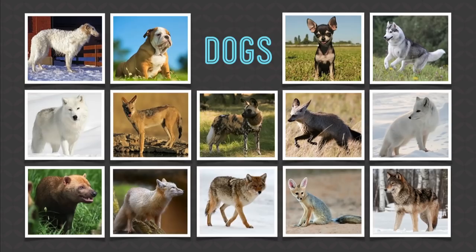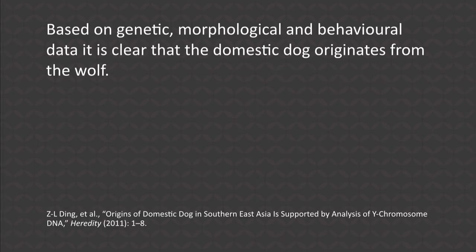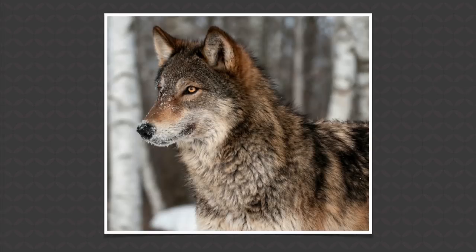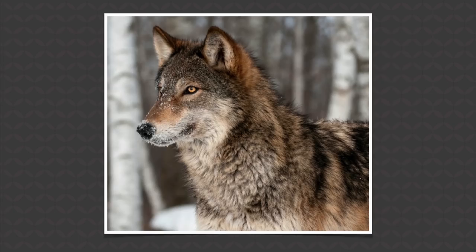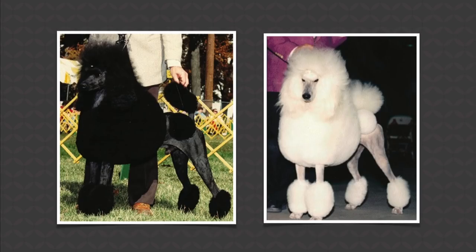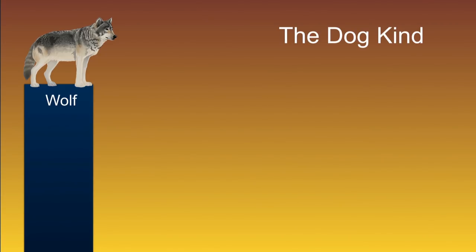There are 34 different species of dogs, and the secular world says, based on genetic, morphological, and behavioral data, it's clear the domestic dog originates from the wolf. The wolf and the domestic dog are actually the same species. Evolutionists use these kinds of changes as evidence for evolution, but actually when you see these changes, that's the opposite of evolution.